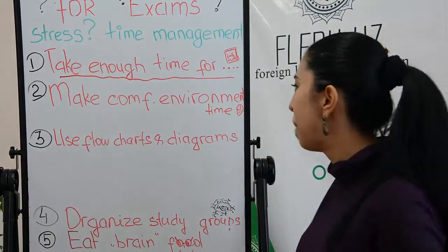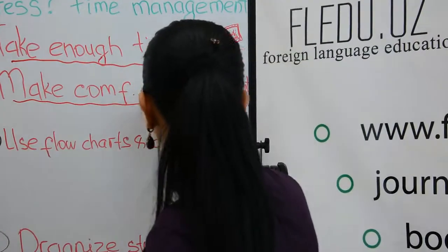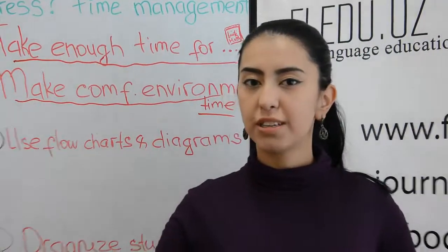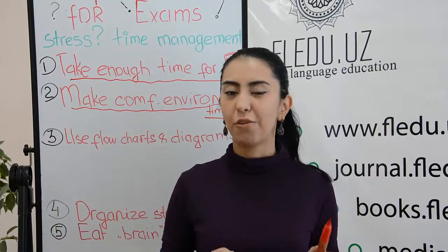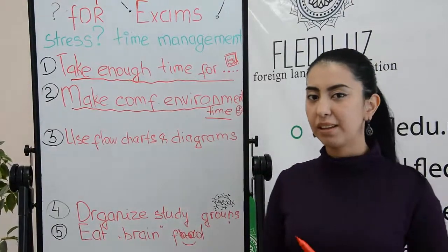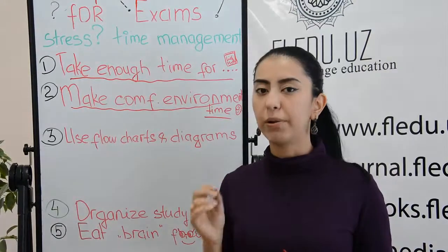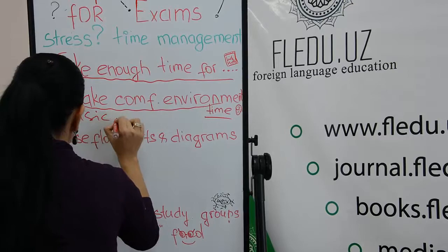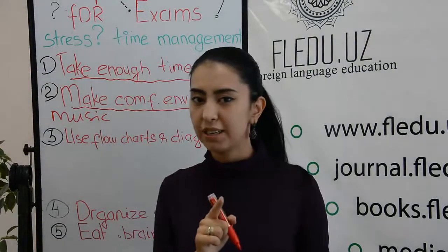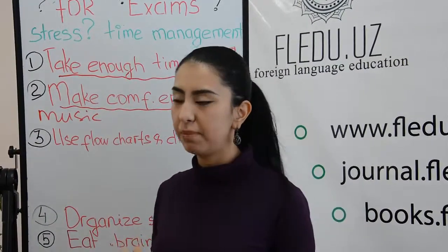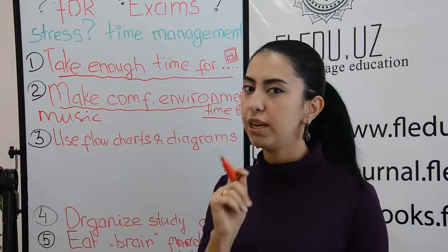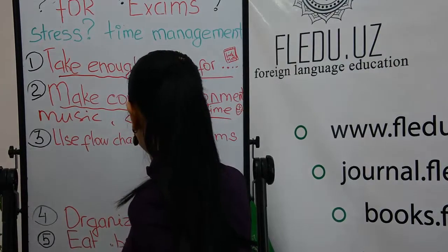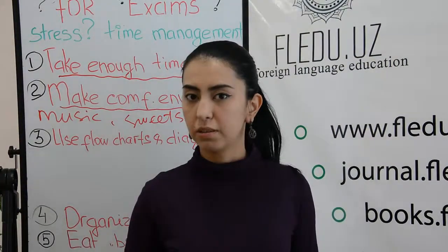The next tip is to make a comfortable environment. For some students it is very important to sit in a comfortable chair, but for others it's important to have background music, or some students like to eat sweets while reading. Find your own comfortable circumstance.